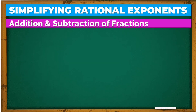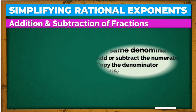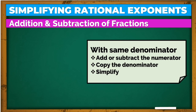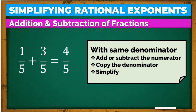Aside from the laws of exponents, we also need to know how to add and subtract fractions. It's easy when the denominators are the same — we just add or subtract the numerators, copy the denominator, and simplify. For example, 1 over 5 plus 3 over 5 equals 4 over 5. We just added the numerators and copied the denominator.